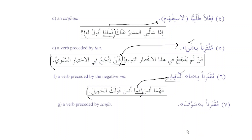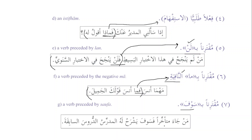Muqtarinan bi-sawfa: when jawab al-shart is sawfa, fa will be added. 'Man ja'a muta'akhkhiran fa-sawfa yashrahu lahu al-mudarrisu al-durusa al-sabiqa' — whoever comes late, the teacher will explain the previous lessons to him. We can see sawfa is the jawab al-shart, and when sawfa is jawab al-shart, fa is connected to it.